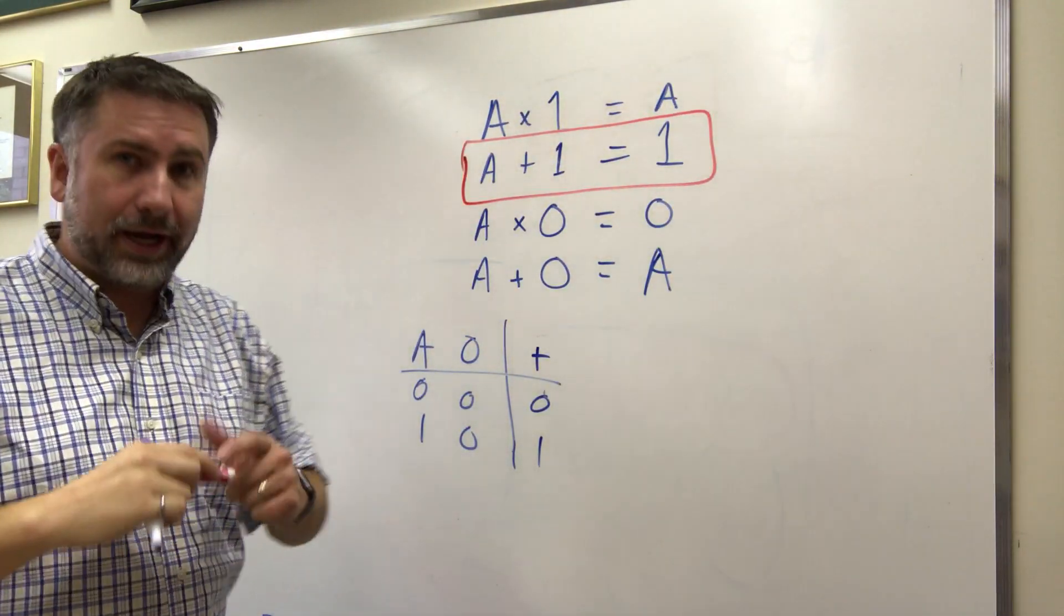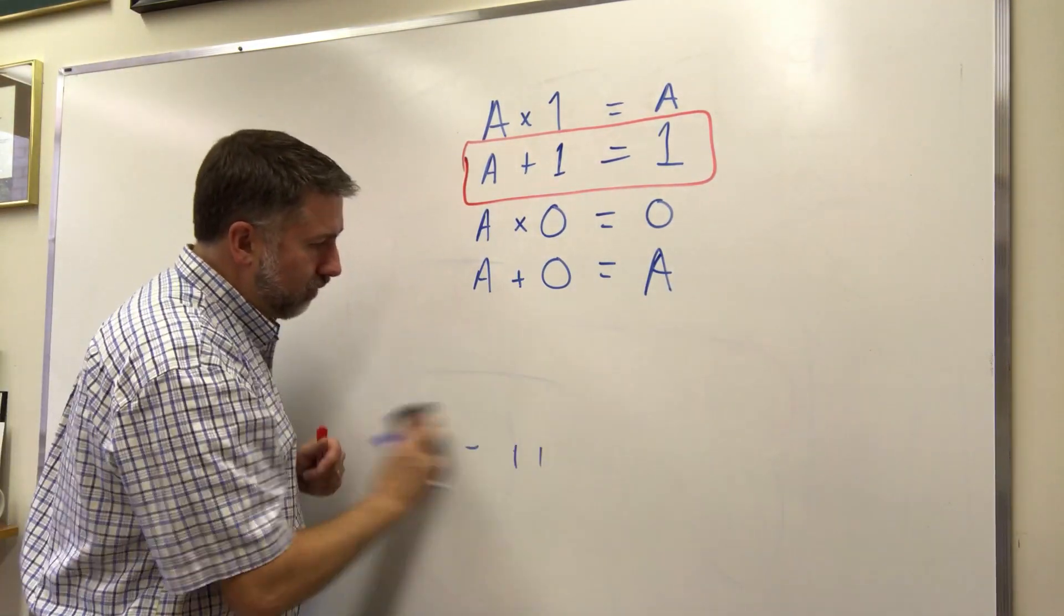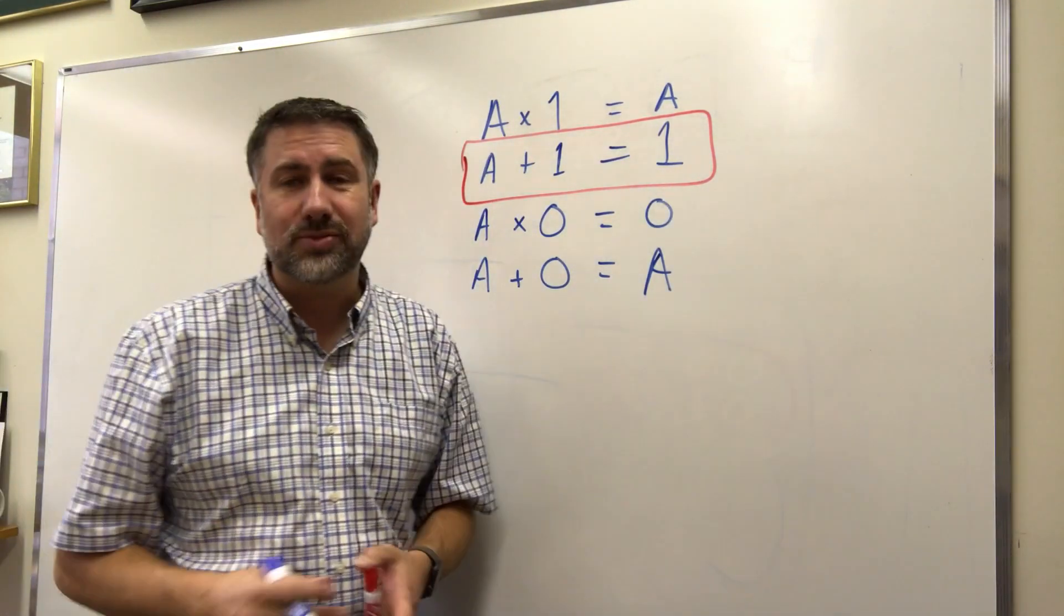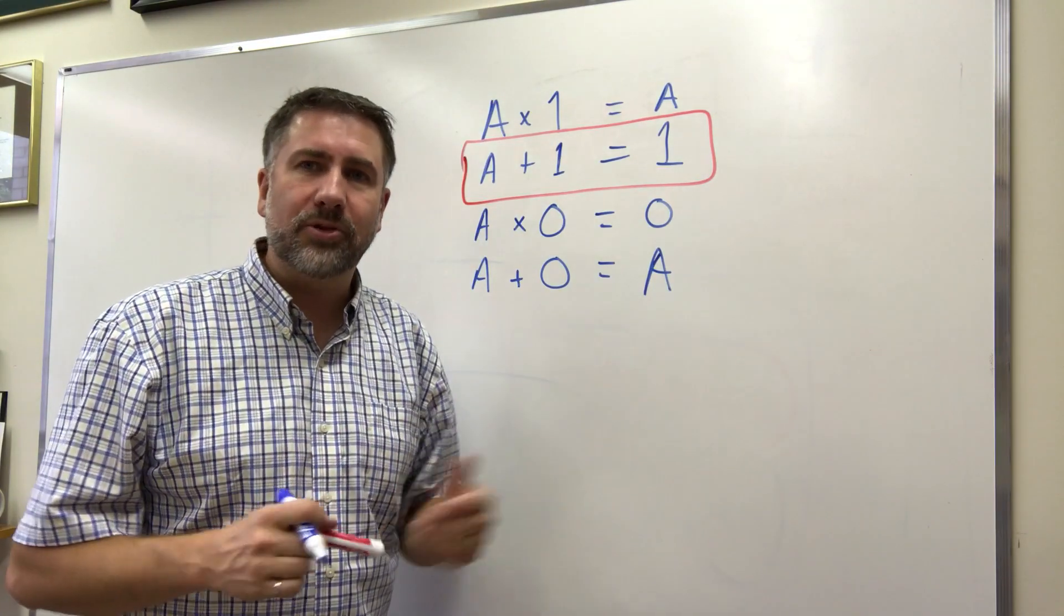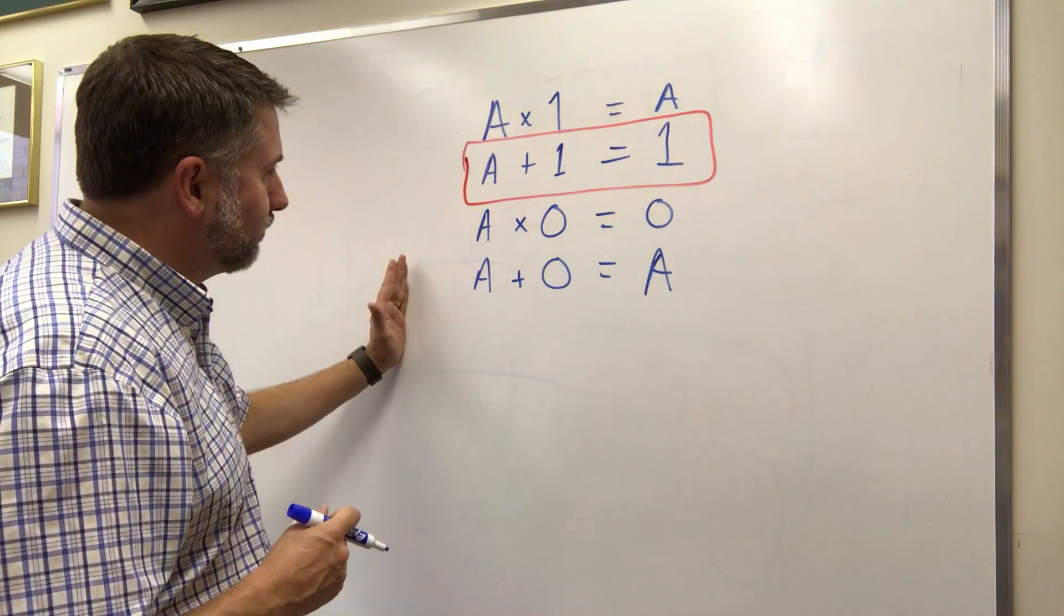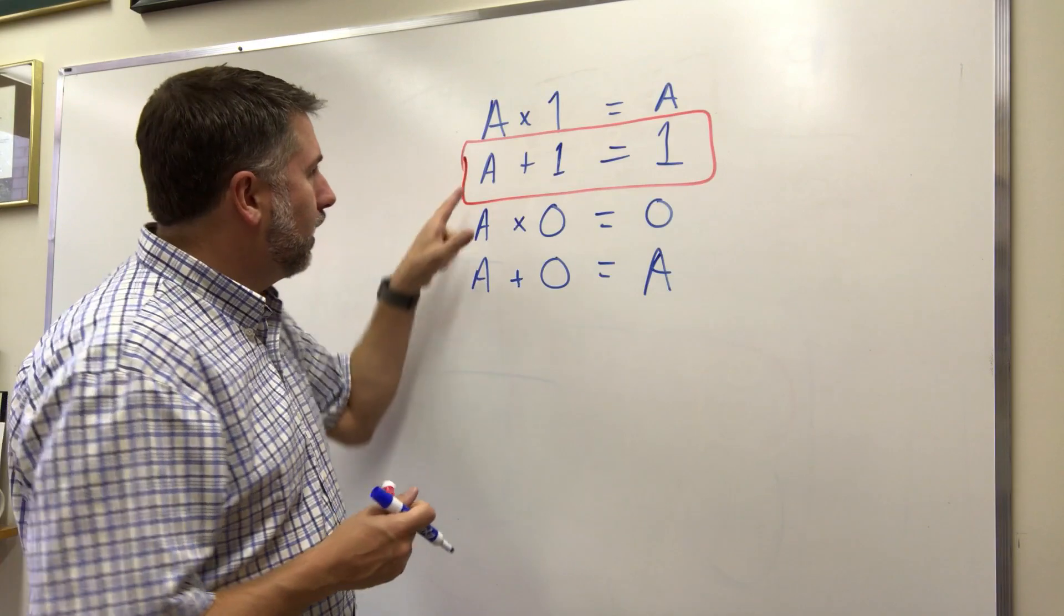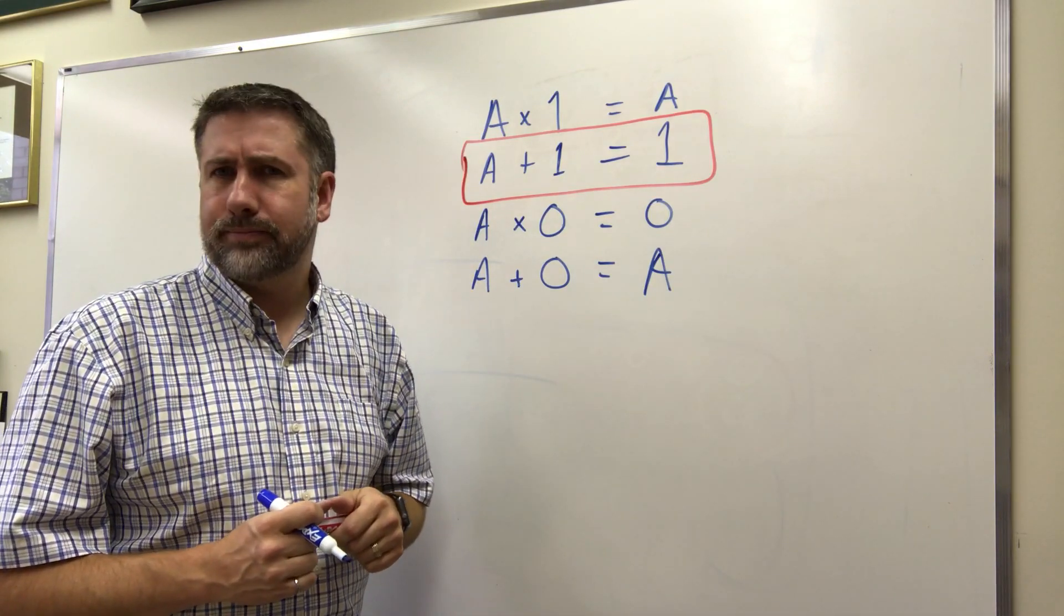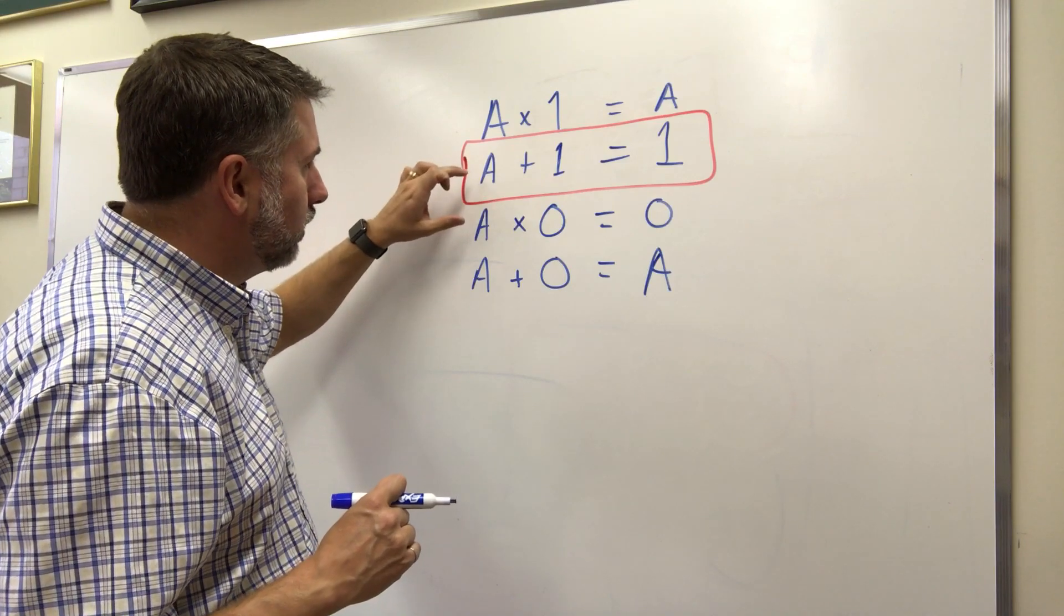And by the way, this is why logicians use the plus and the times as shorthand for AND and OR, because in most circumstances, they kind of work like AND and OR, as we'll see later with some of the higher-level rules that we're going to use. But in this case, if we're manipulating with ones and zeros, the only thing that's weird is when you add one, you get one, which is odd.